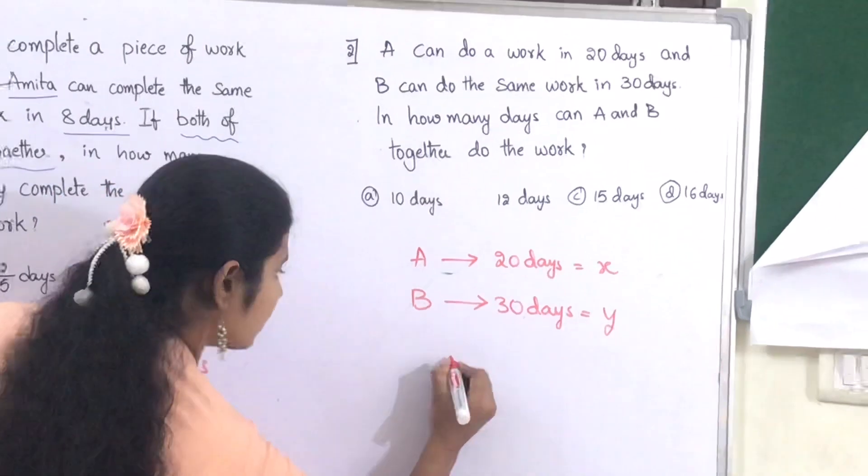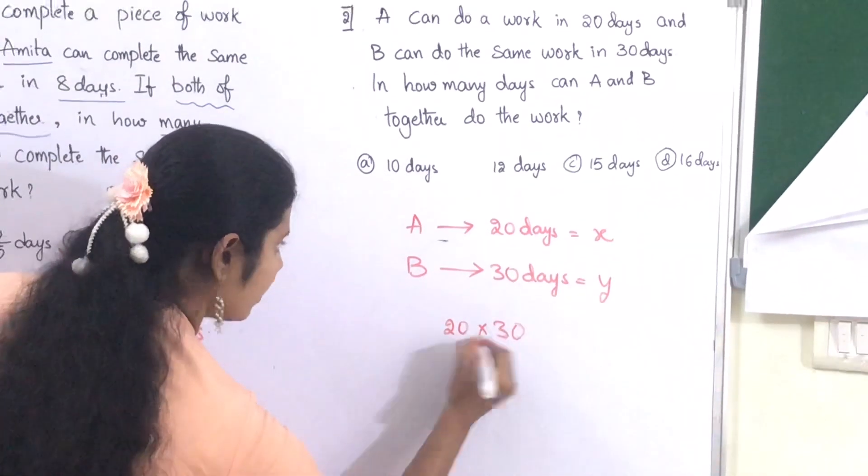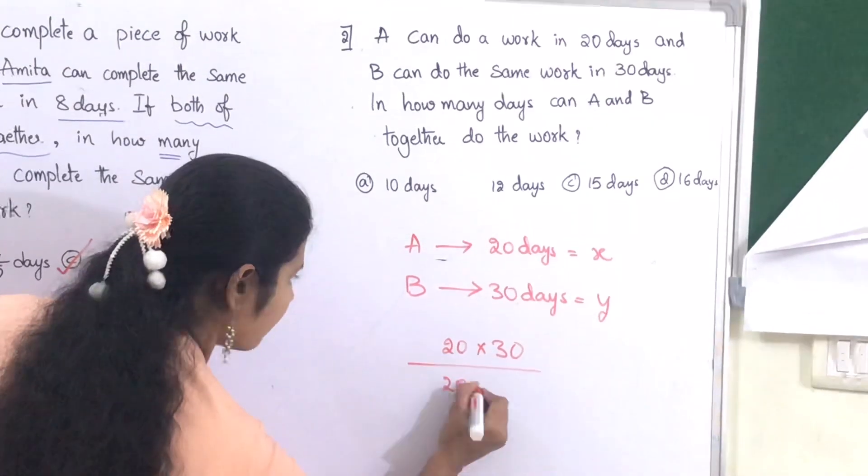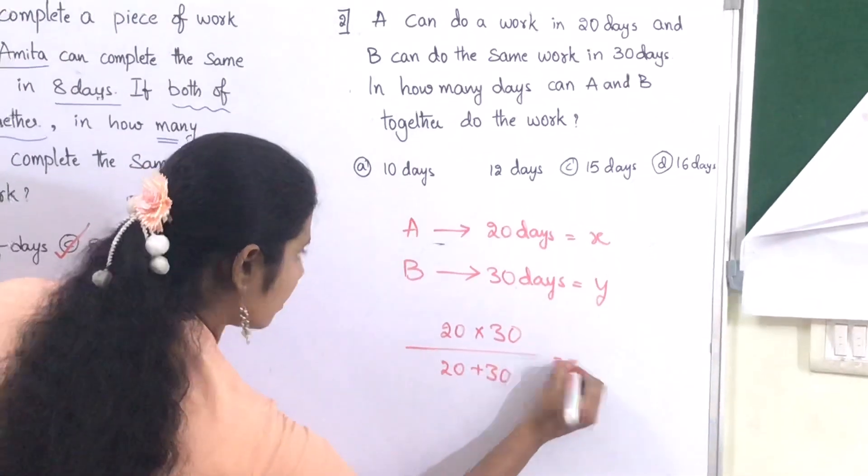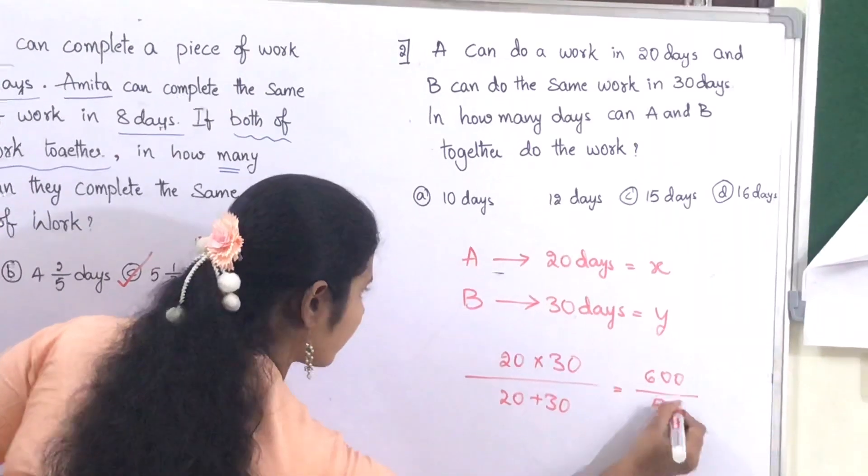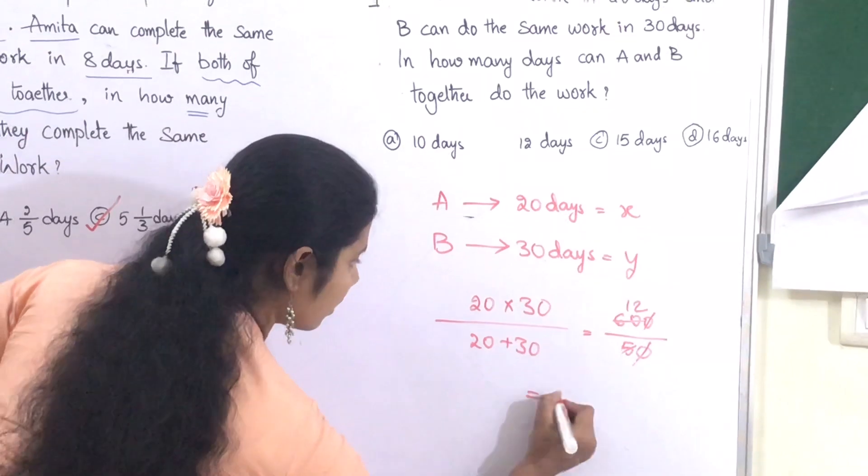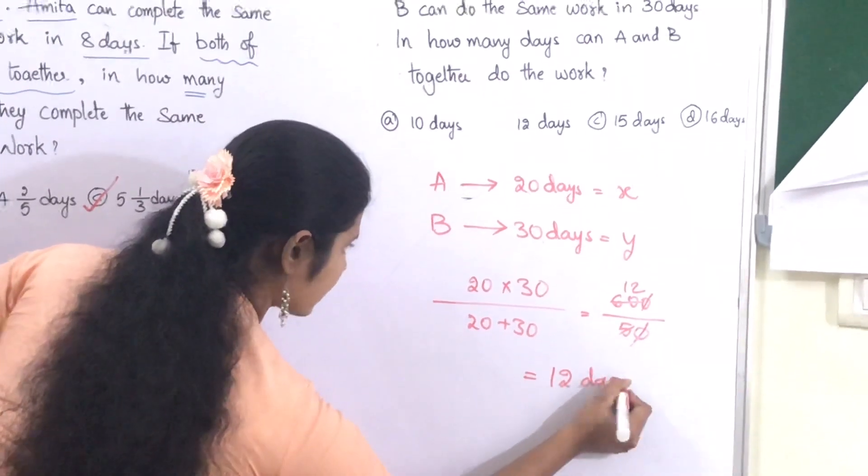By applying this formula: 20 into 30 divided by 20 plus 30. That is 600 divided by 50. 5 goes into 50 ten times, 5 into 10 is 2, giving us 12 days.